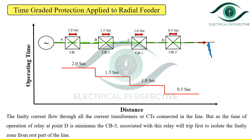This is a desired operation. Relay D will operate because it has the smallest operating time. It is a desirable operation because it is expected that the smallest possible part of the system should be isolated in case of fault.